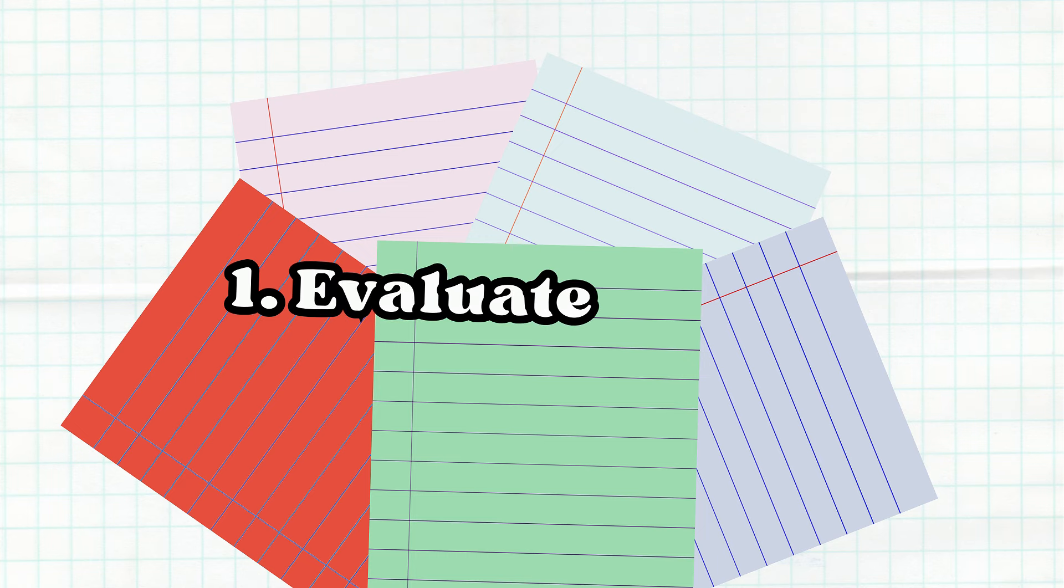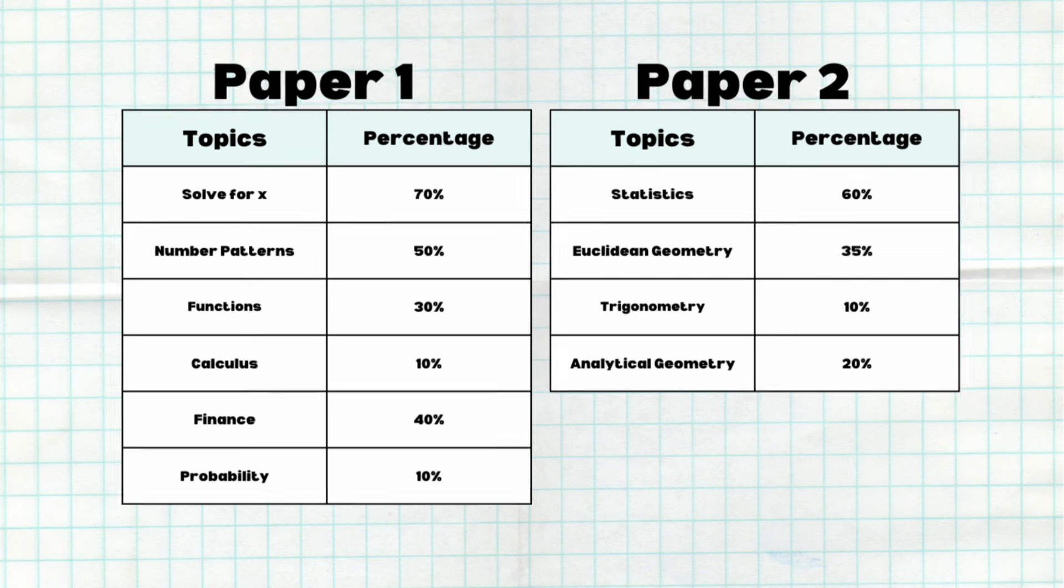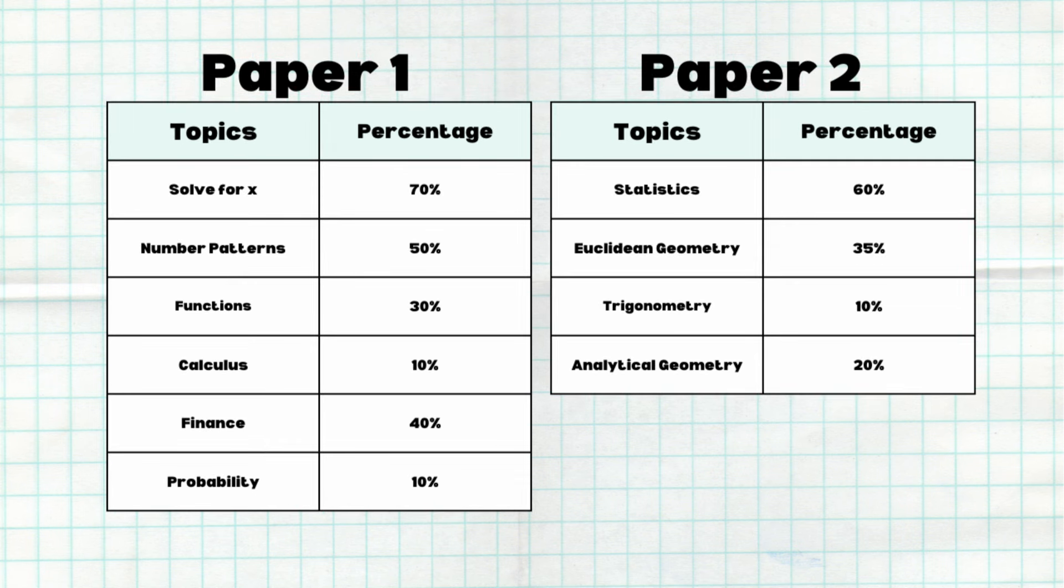Step 1: Evaluate the topic. The first thing you need to do is evaluate each topic to see which ones you're strong in and which ones need more work. To do this, list all the topics and rank them.